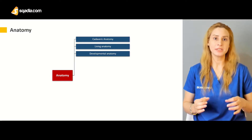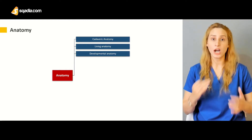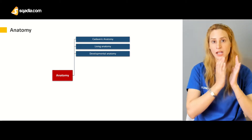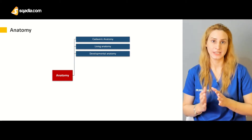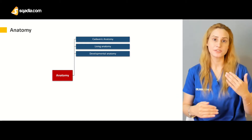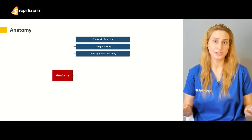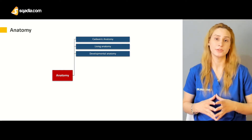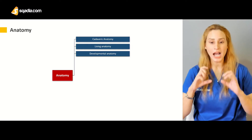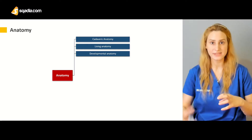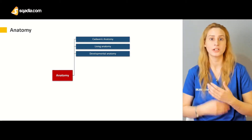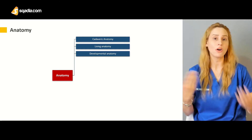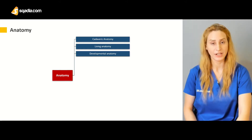Then you have the developmental anatomy, which is very important. Embryology is a kind of sub-subject — a subdivision of anatomy. You learn how development occurs, for example the development of the heart or the genitourinary system: what the basic origin of cells is, what the endoderm and mesoderm are, whether an organ is mesodermal or endodermal in origin.